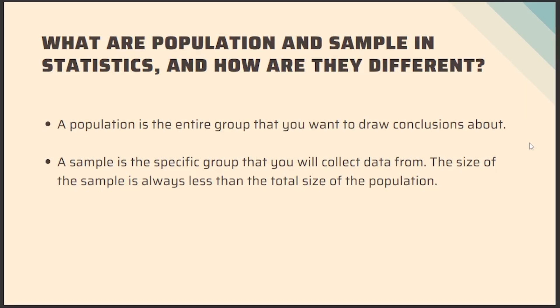A population is the entire group that you want to draw conclusions about, and a sample is the specific group that you will collect data from. The size of the sample is always less than the total size of the population. When you perform a study, the huge amount of data that you collect is the population, and the sample is a small portion of that data.